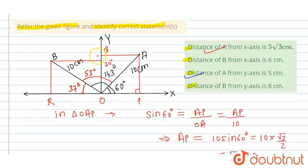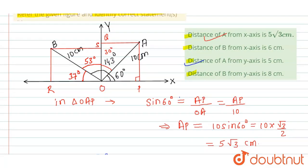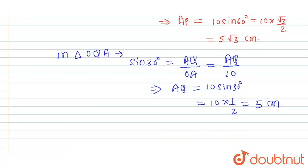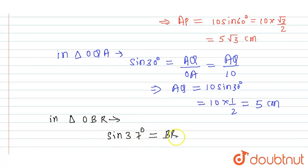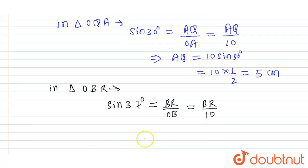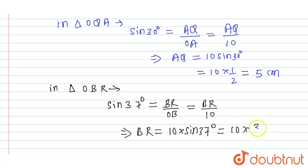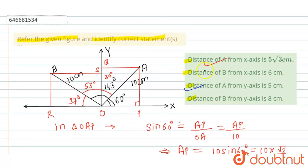Let's call these points R and S. In triangle OBR, I can write: sin 37° = BR / OB. OB is given as 10, so BR = 10 × sin 37° = 10 × (3/5) = 6 centimeters. The distance of B from the x-axis is 6 centimeters, so option B is also correct.